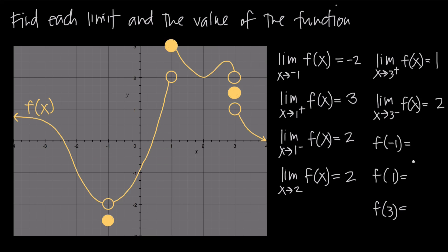Now let's talk about the actual value of the function at various points. f of negative 1 means the value of the function at x equals negative 1. Coming to x equals negative 1, we have two choices: a hollow circle at y equals negative 2 and a darkened circle at about y equals negative 2.5. The value of the function is always at the darkened, or solid, circle — not the hollow one. There's a discontinuity here, but the value of the function is negative 2.5.